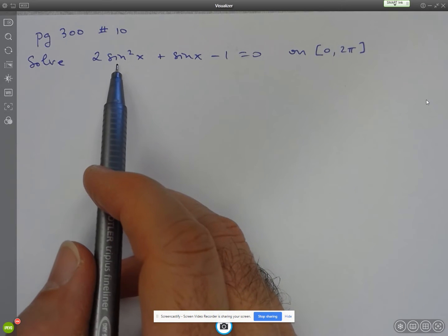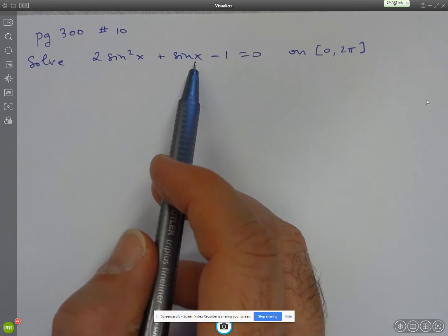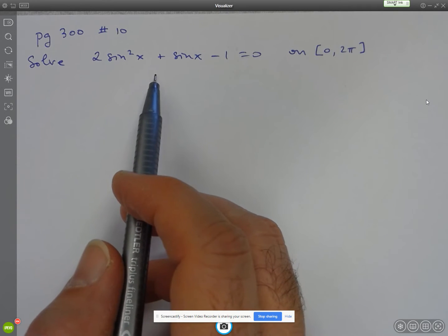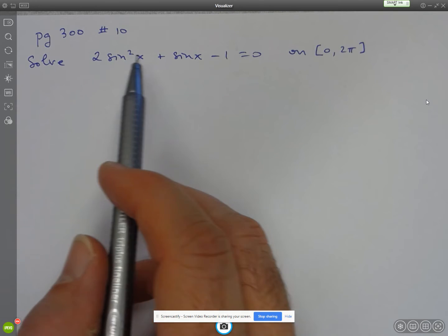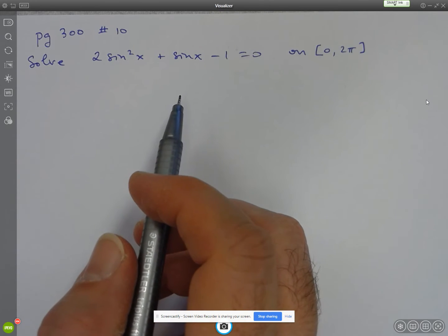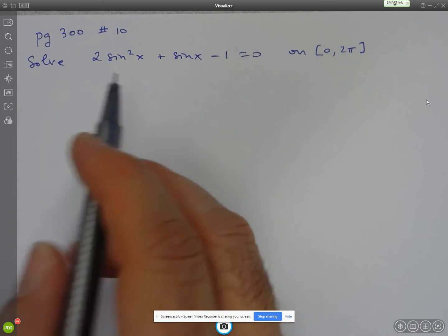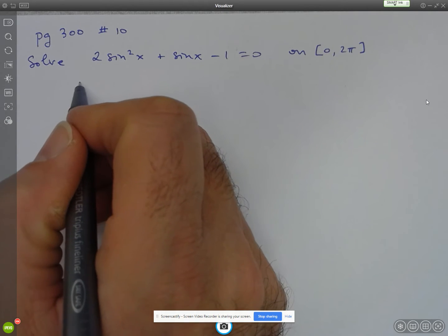So again, remember the trick of replacing sin x by some other variable like z. So you could rewrite this as 2z squared plus z minus 1. It might be easier to do the factoring. But here I'll do that without doing the change of variable.